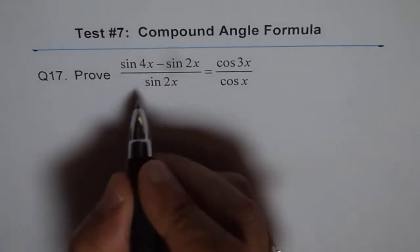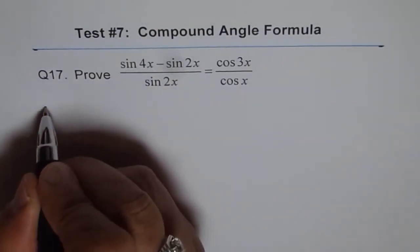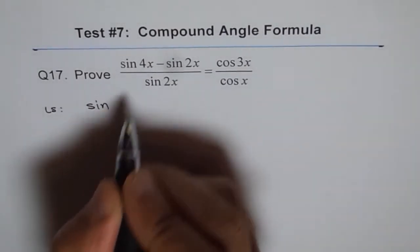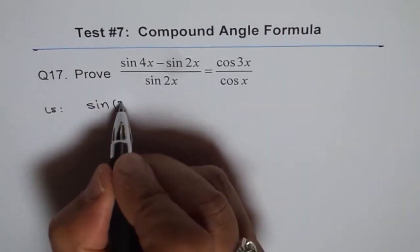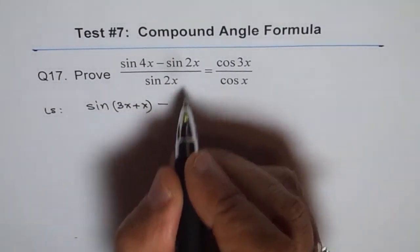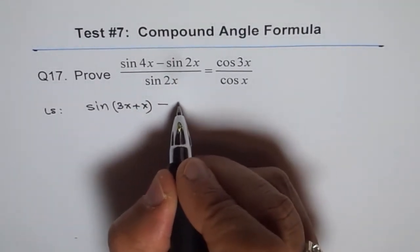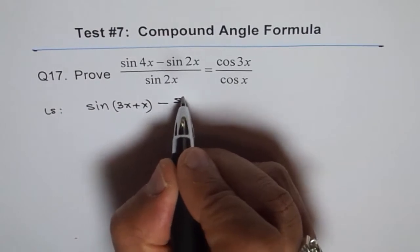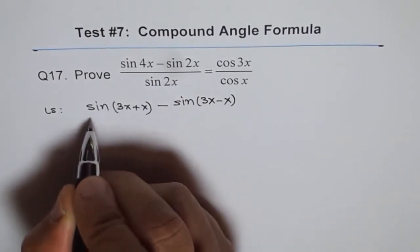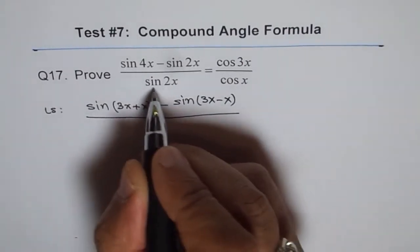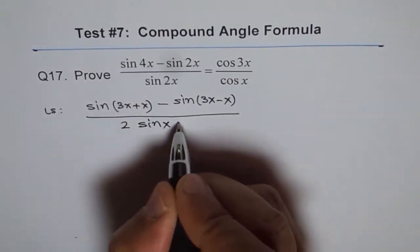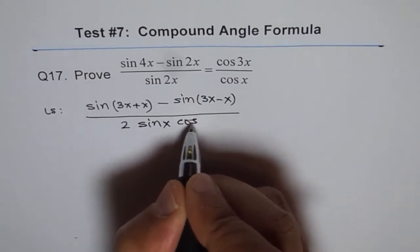Here is my solution. We start with the left side. Sine 4x can be written as sine of (3x plus x), and sine 2x can be written as sine of (3x minus x). The denominator, sine 2x, can be written as 2 sine x cos x.